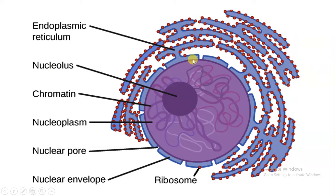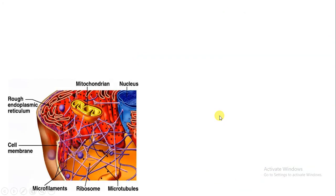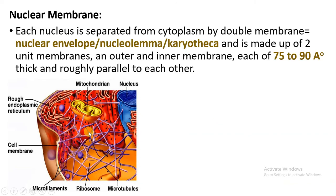The components are: the outer membrane, the inner membrane, the nucleoplasm, the nucleolus, and the chromatin fibers. When we study about the nucleus, first we will study about the nuclear membrane. As you can see in the diagram, this is the nuclear membrane, this is the nucleus, and this is the cytoplasm. The nucleus is separated from the cytoplasm by the help of the nuclear membrane. The nuclear membrane is also called as nuclear envelope, nucleolema, or karyotheca.